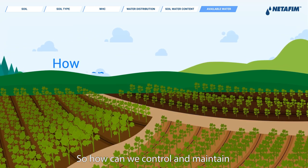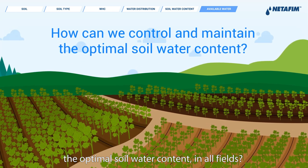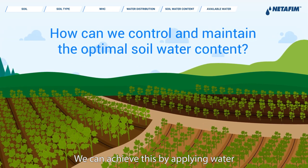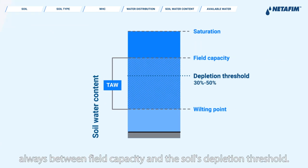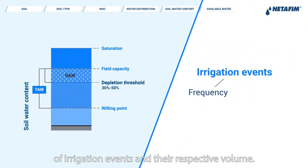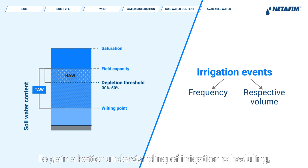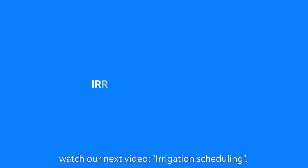So how can we control and maintain the optimal soil water content in all fields? We can achieve this by applying water in a way that maintains water content always between field capacity and the soil's depletion threshold. This will be determined by the frequency of irrigation events and their respective volume. To gain a better understanding of irrigation scheduling, watch our next video: Irrigation Scheduling. Thanks for watching!